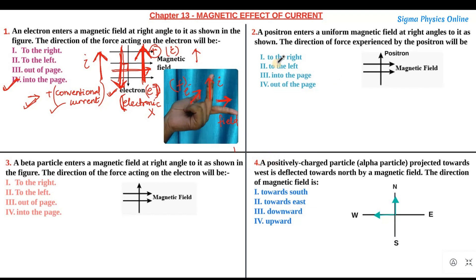I hope you have understood this. Let's go to the next question. The next question says: a positron enters a uniform magnetic field at right angles to it as shown. The direction of force experienced by the positron will be to the right, left, into the page, or out of the page.